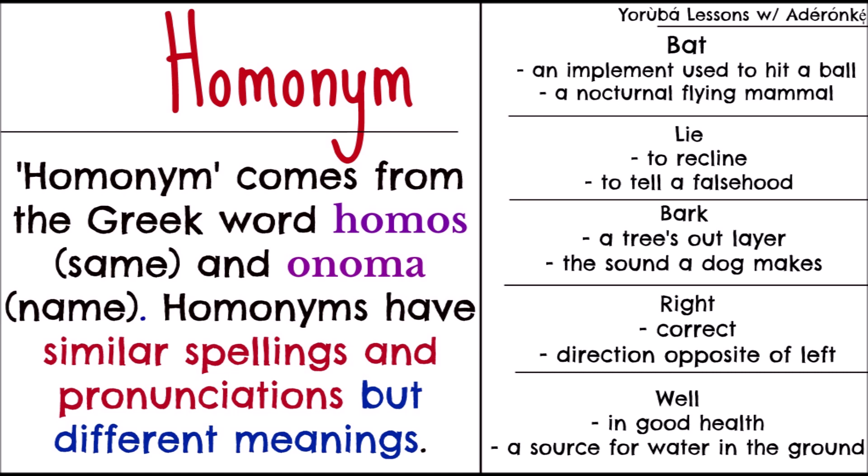Homonym comes from the Greek word homos, which is same, and onoma, which is name. Homonyms have similar spellings and pronunciations but different meanings. So we do have homonyms. Take the word 'bat' for example — when you write bat, it's spelled and pronounced that way, but depending on the context, the meanings may vary.